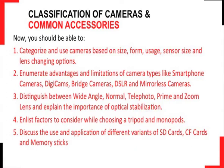As we come to the end of this episode, I am confident that now you should be able to categorize and use cameras based on size, form, usage, sensor size and lens changing options. You should be able to enumerate advantages and limitations of camera types like smartphones, Digicams, bridge cameras, SLRs, DSLRs and mirrorless cameras. You should be able to distinguish between wide angle, normal, telephoto, prime and zoom lens, explain the importance of optical stabilization, enlist factors for choosing a tripod and monopod, and discuss the applications of different variants of SD cards, CF cards and Memory Sticks. I sincerely hope that this session was very useful and informative. We conclude this episode on classification of cameras and common accessories used in photography. That is all for today. Thanks and goodbye.